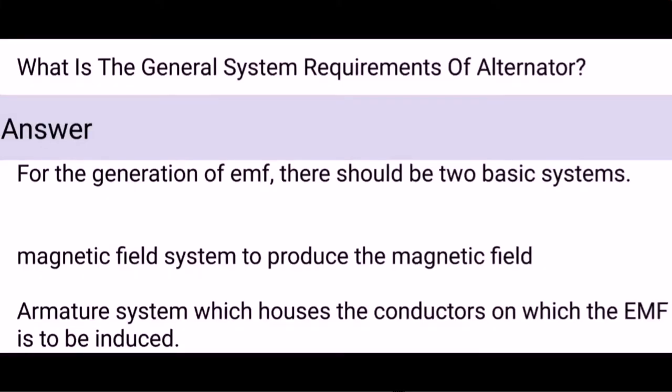What is the general system requirements of alternator? For the generation of EMF, there should be two basic systems: a magnetic field system to produce the magnetic field, and an armature system which houses the conductors on which the EMF is to be induced.